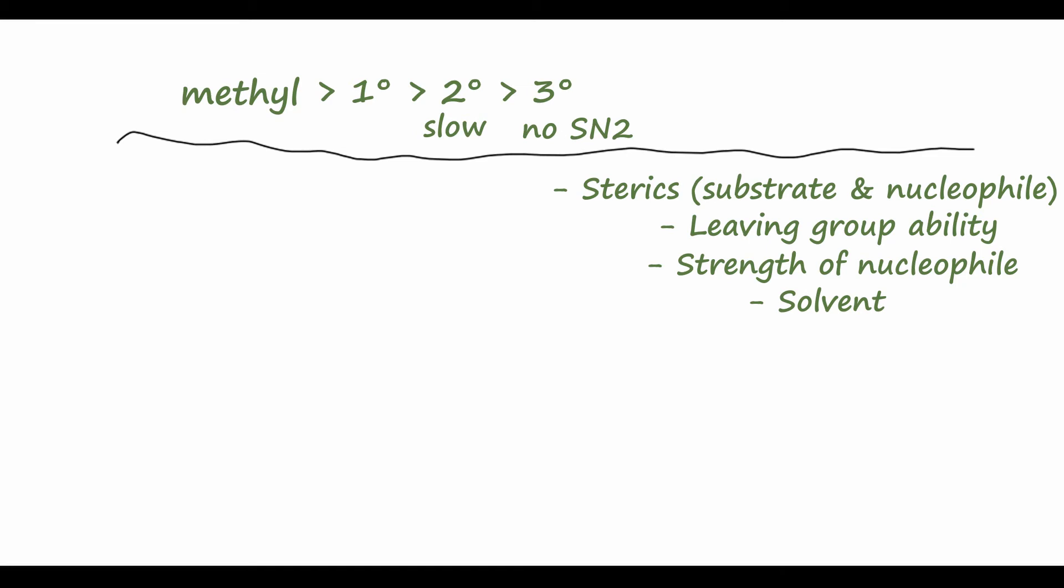Let's start with these two SN2 reactions here, where we have ethyl bromide reacting with sodium iodide as our nucleophile. I'm not going to bother to write in the products, but hopefully you can understand that the nucleophile will substitute the leaving group in all of these cases. And for the second reaction, we will have isopropyl bromide, so just adding one methyl group there. So which of these reactions will be faster?